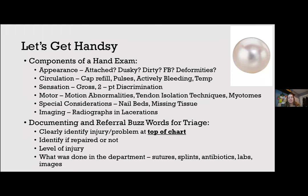To make referrals easy for plastics colleagues, clearly identify which hand, what level the injury is at, and what was done in the department — including imaging, labs, antibiotics, and contact information. Confirm contact info and let the patient know the call may come from an unknown number. A good referral triage note would read: 'Right hand extensor tendon at the MCP joint of the ring finger — not repaired but splinted.' That includes essentially everything needed to triage appropriately.